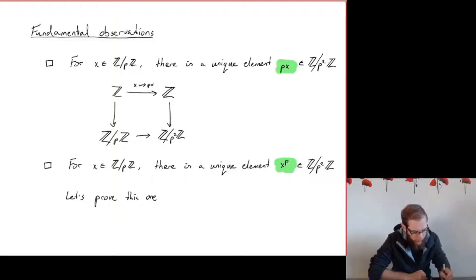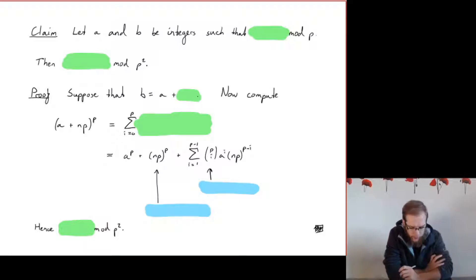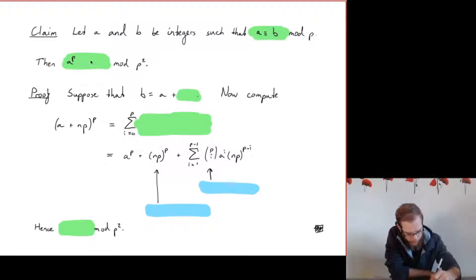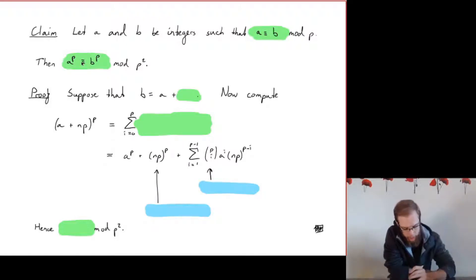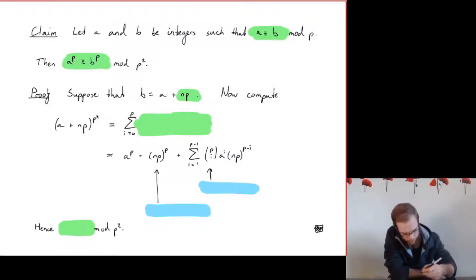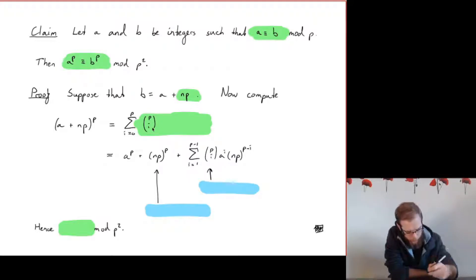Let's prove what exactly is going on. The precise claim is: if we have two integers a and b congruent modulo p, then in fact a^p and b^p will be congruent modulo p². The fact that a and b are congruent modulo p means that b is of the form a + np for some n. So we compute (a + np)^p and use the binomial theorem to expand it, getting binomial coefficients p-choose-i times a^i times (np)^(p-i).